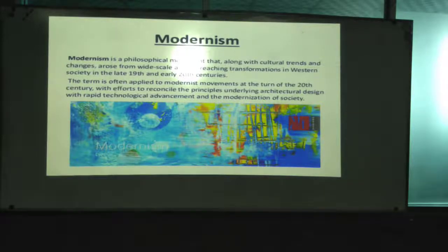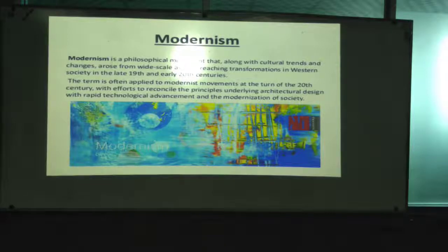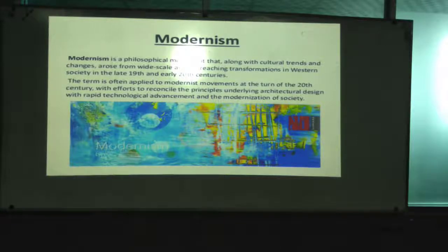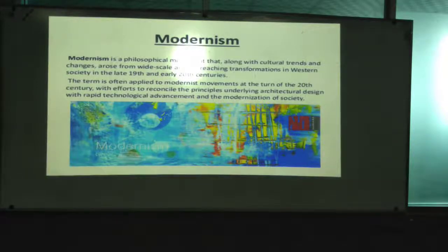Modernism is a philosophical movement that, along with cultural trends and changes, arose from wide-scale and far-reaching transformation in Western society in the late 19th and early 20th centuries. We can say it starts in the 1870s or 1880s. The term is applied to modernist movements at the turn of the 20th century.